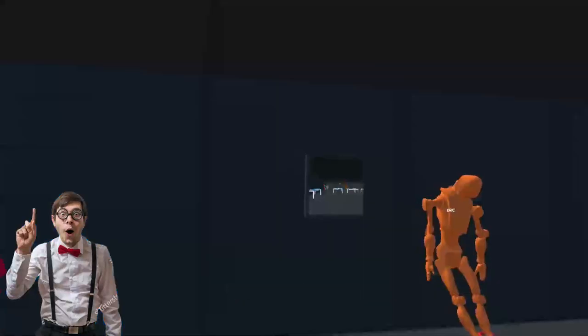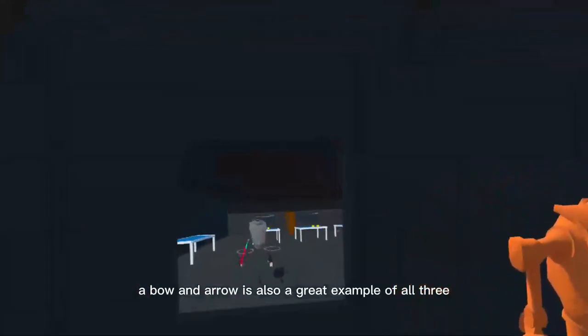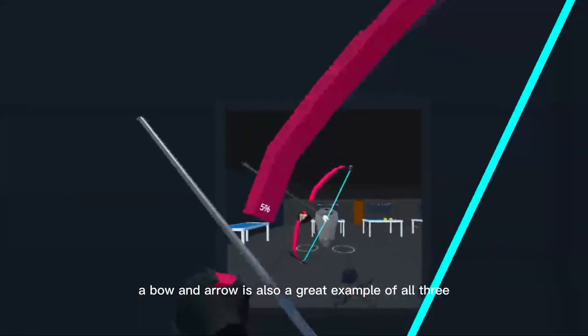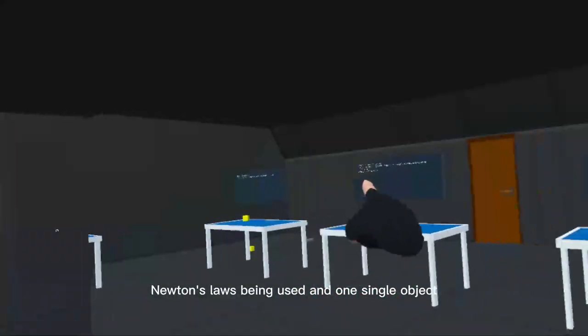As seen by the arrows, a bow and arrow is also a great example of all three Newton's laws being used in one single object.